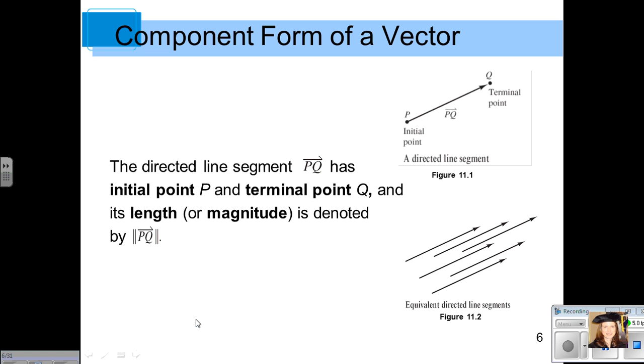Here's an example of a vector, which is a directed line segment from the point P to our point Q. P is called our initial point. Q is the terminal point. It is a directed line segment beginning at P and ending at Q. The notation we use is PQ with a little arrow just above it, starting at P going to Q. And its length or its magnitude is denoted by using these double bars.